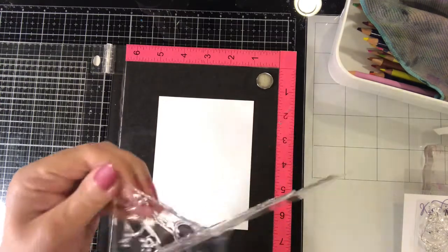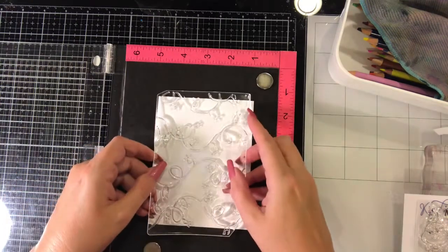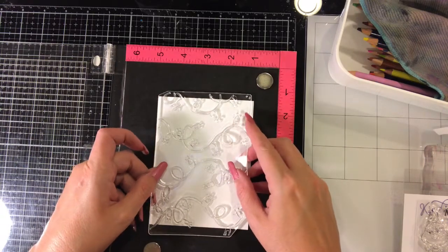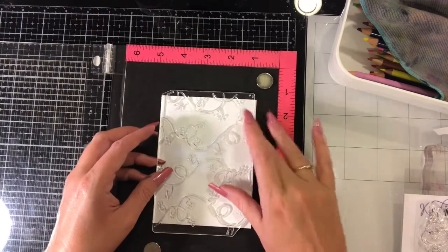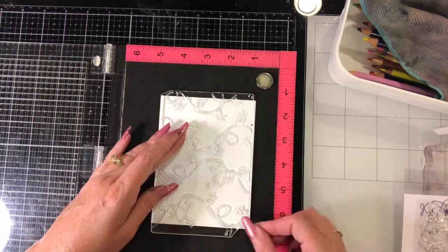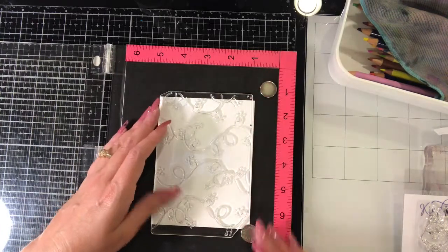The first thing that we're going to do is take a piece of four and a quarter by five and a half, or that might actually be four by five and a quarter, I can't exactly remember, but it is a little bit larger than the background stamp that we're going to use. And that stamp is from Joy Claire. It's called Christmas Lights. It's the first time that I'm using it.